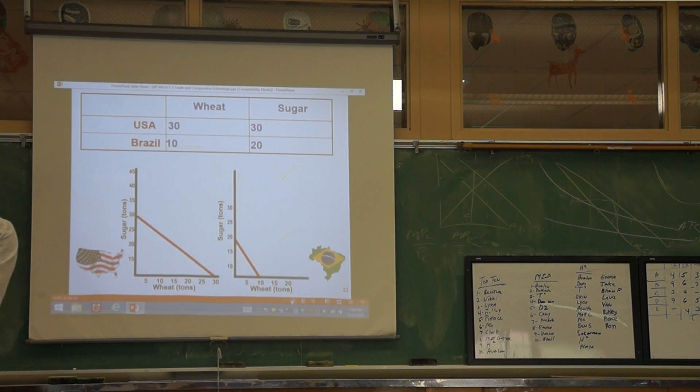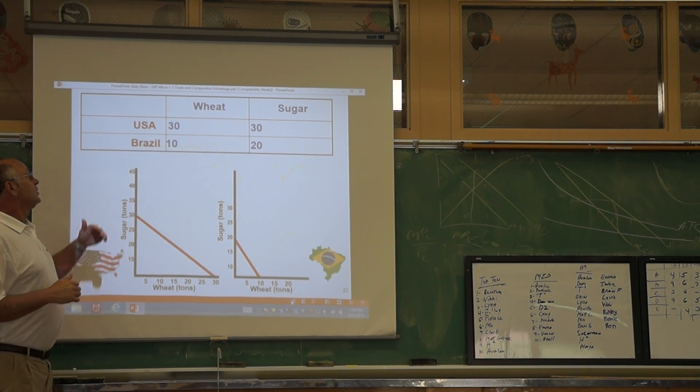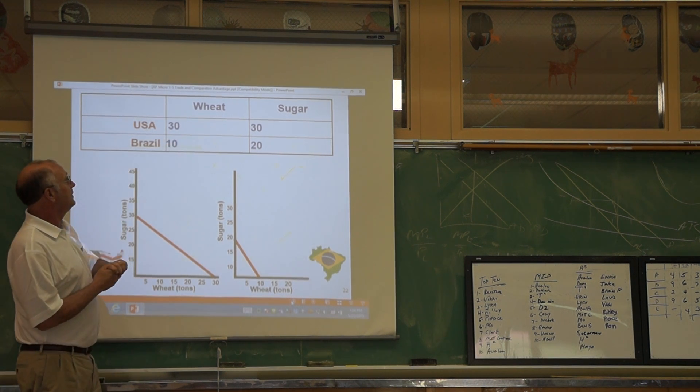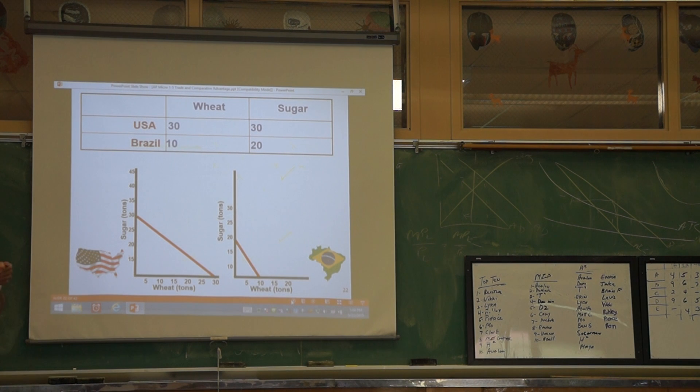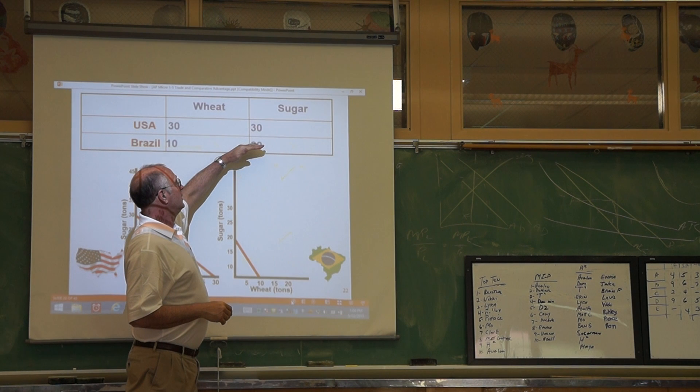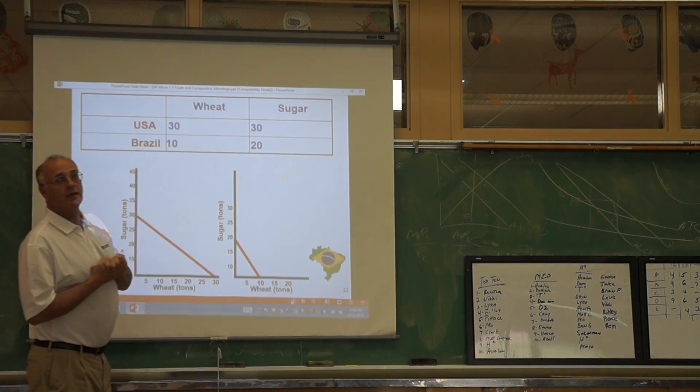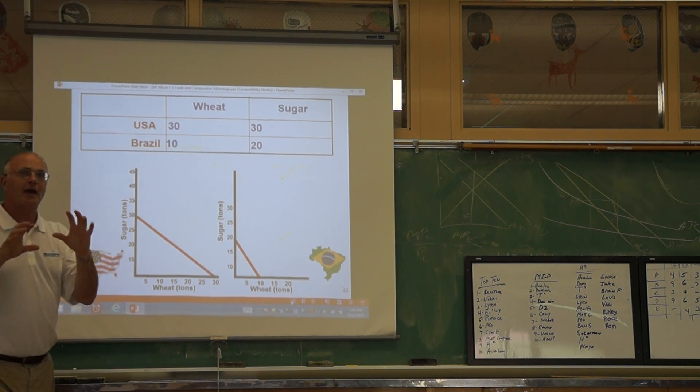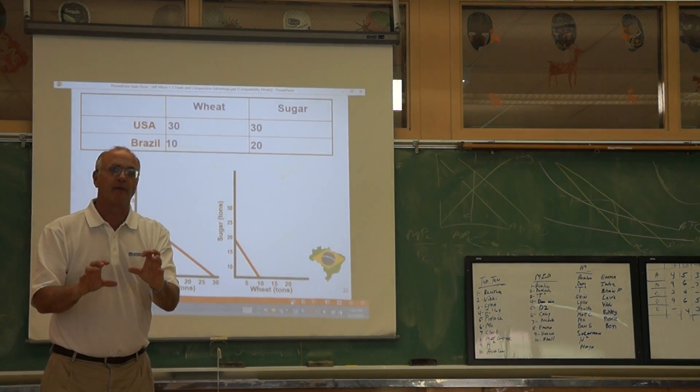Let's start with absolute advantage. Absolute advantage is which country can make more outputs. This is an output problem—how many tons of wheat or sugar each country produces. For absolute advantage, you just look: the United States makes 30 tons of wheat, Brazil makes 10, so the United States has the absolute advantage over Brazil. In sugar, the United States makes 30, Brazil makes 20, so the United States has the absolute advantage there too. For absolute advantage, a country could have the absolute advantage in both products.